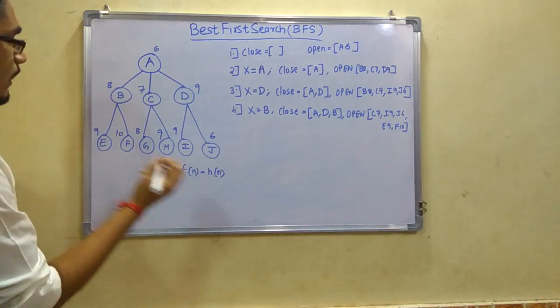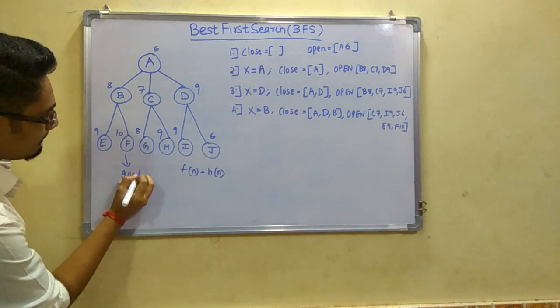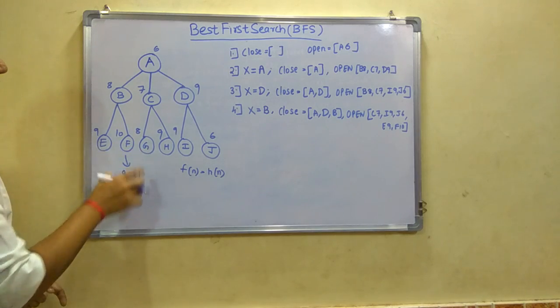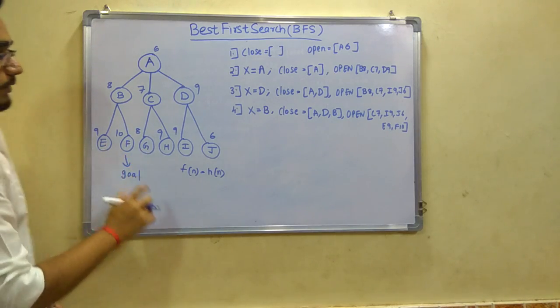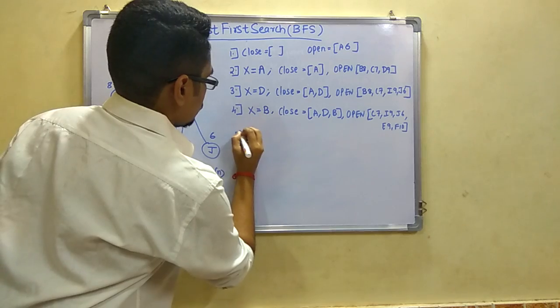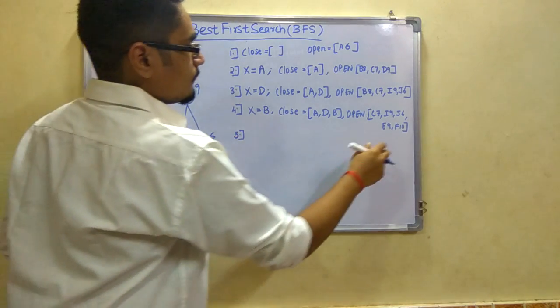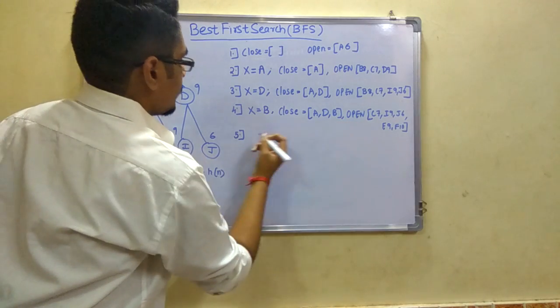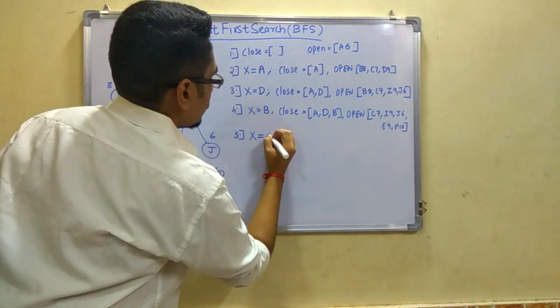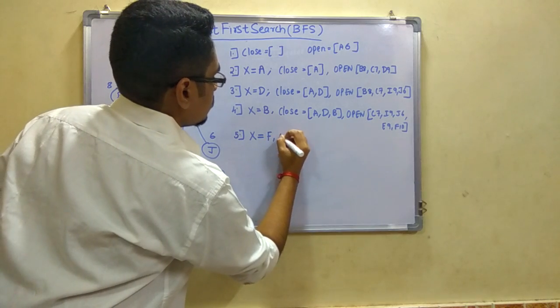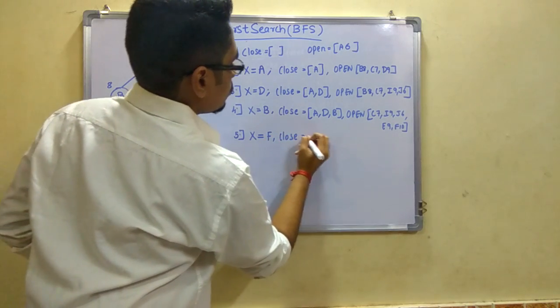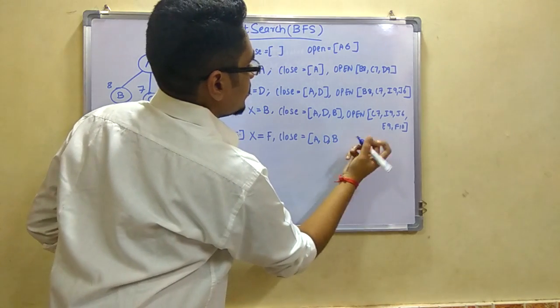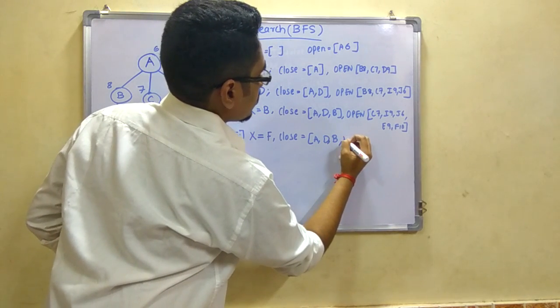By the way, our goal node is F, so we want our final answer to reach this goal node. Our final step would be taking the maximum value, F10. So we take x as F. We have set of closed nodes as A, D, B and F.